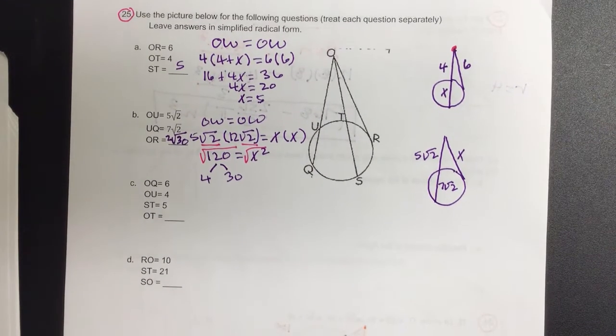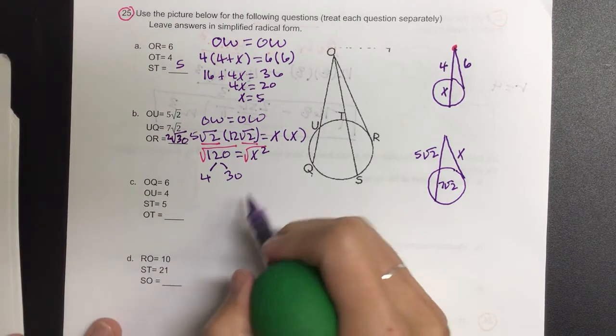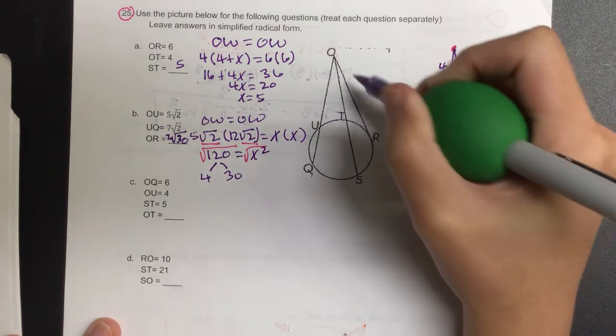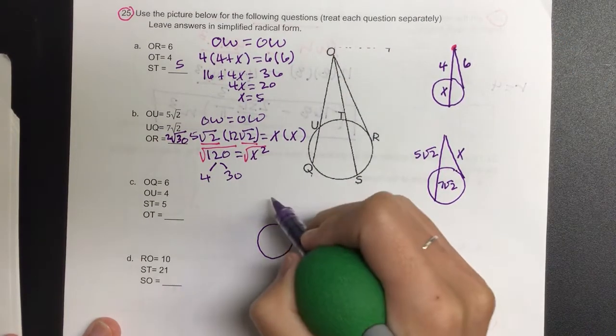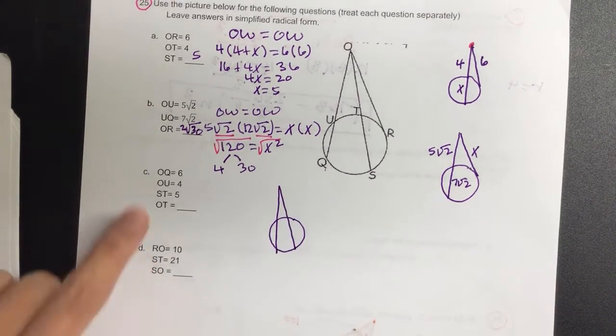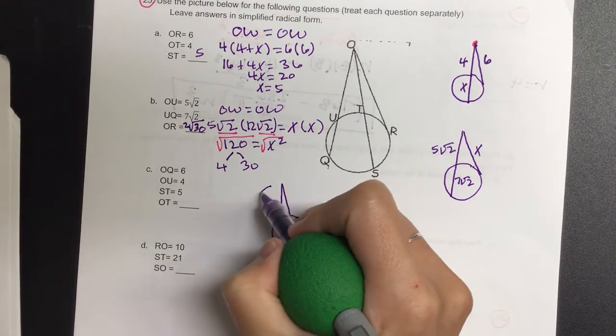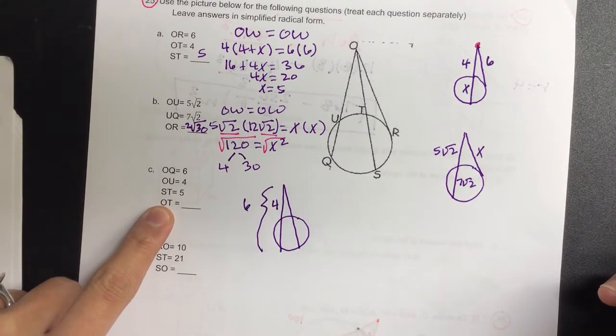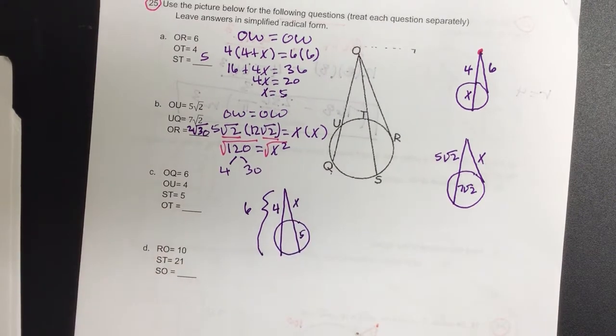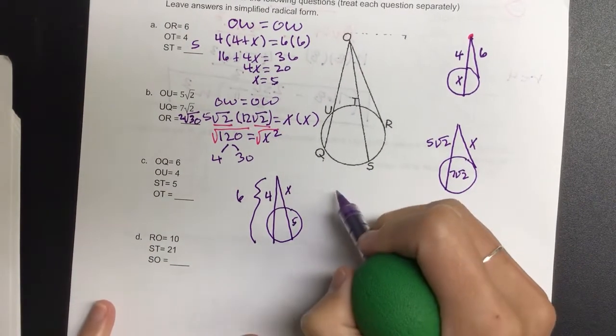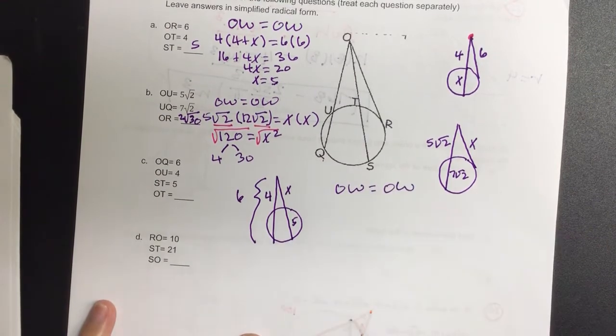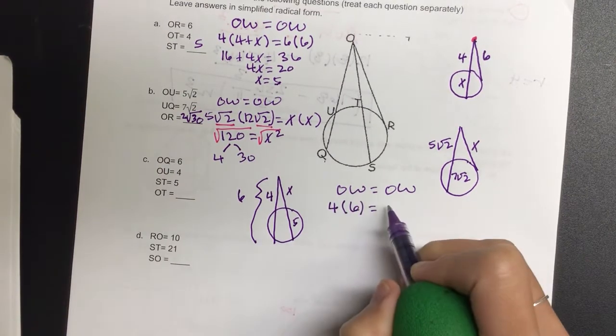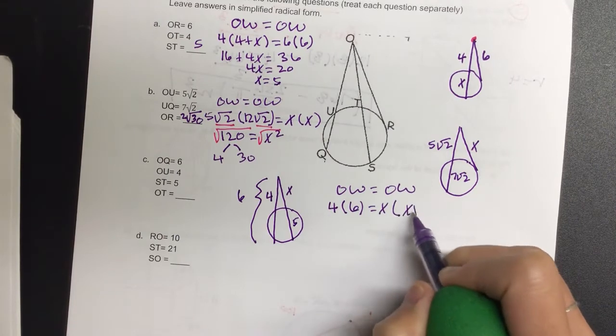Are we ready for the third piece? I'm going to redraw this. So we're looking at OQ this time and TS. So we don't need OR. So I need this one and I need this one. So we know OQ, the whole thing, is 6. OU is 4. And then we know ST is 5. And let's call this one X. So let's write out our formula again. What's on the outside of the first segment on the left? 4. What is the whole thing? 6. What's on the outside on the right? X. And the whole thing? X plus 5. Very good.